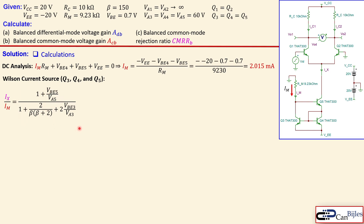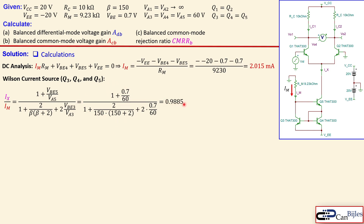The full derivation of the Wilson current source ratio is quite lengthy and tedious, producing messy expressions, so the details are left out. Using the resulting expression and substituting Vbe = 0.7 V, early voltage = 60 V, and beta = 150, we find that the ratio Ix/Im equals 0.9885. This means it is not a perfect one-to-one copy — there is some error.